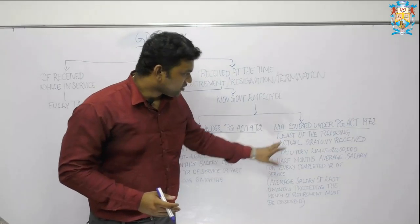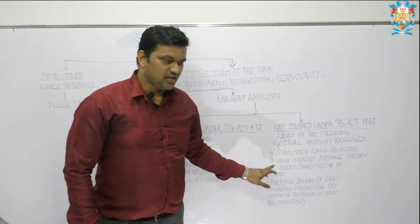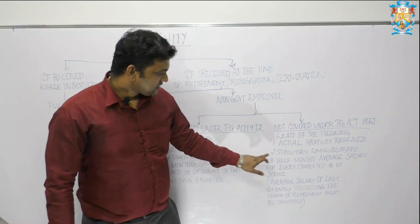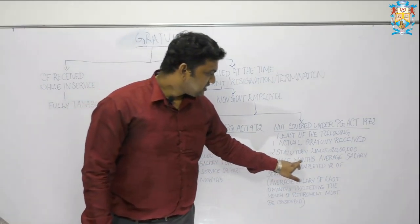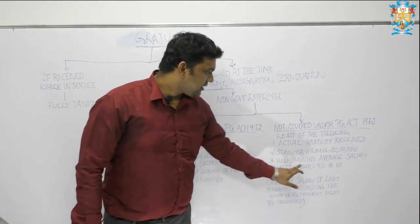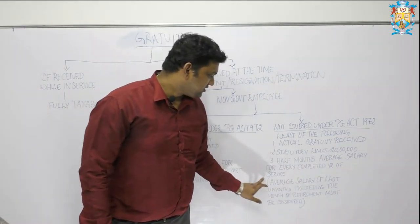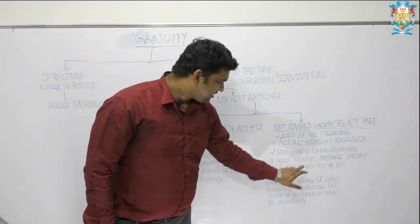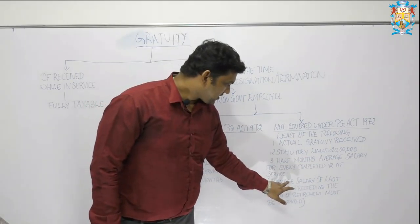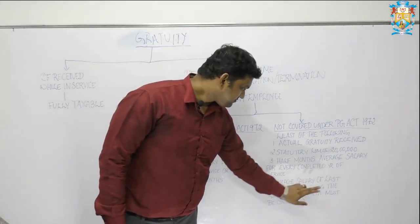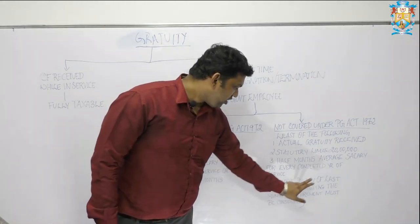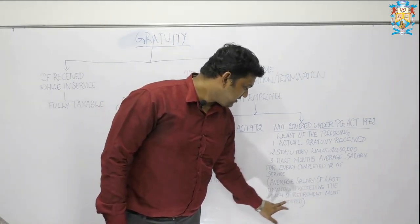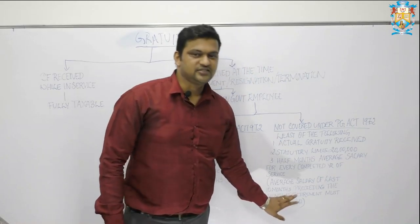Coming to not covered under the Payment of Gratuity Act 1972, the third rule says half month average salary for every completed year of service. Average salary is the average salary of the last ten months preceding the month of retirement.